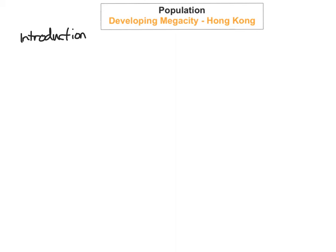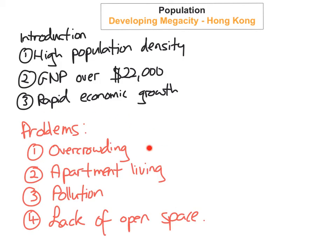These are some of the problems they face because of the huge population density. It's similar to what we looked at in Calcutta, except this is a more developed economy, but some of the problems are similar: overcrowding, apartment living, pollution, and a lack of open space.